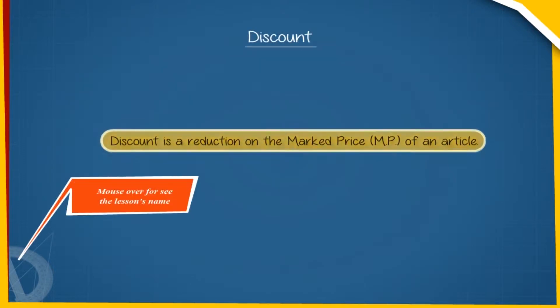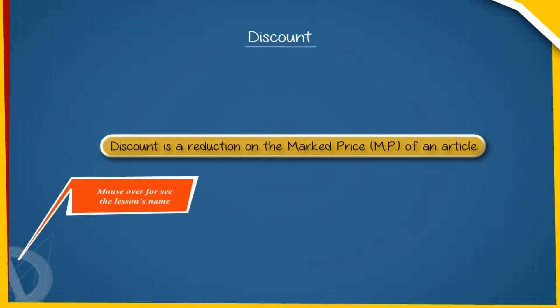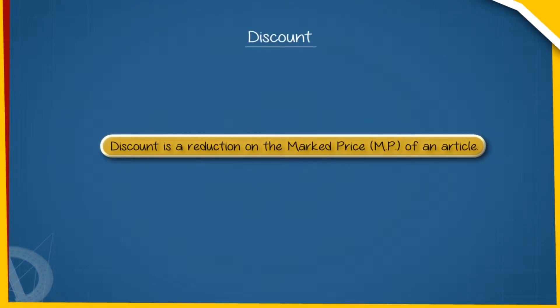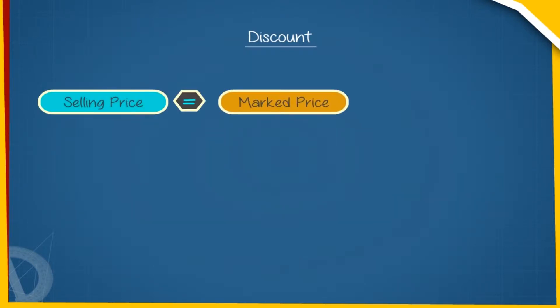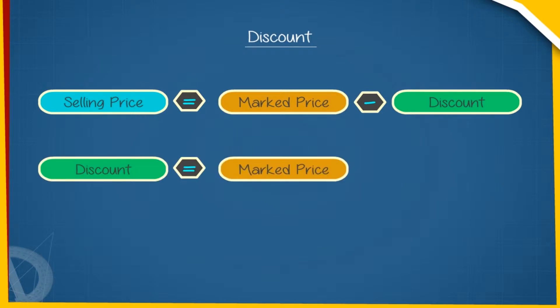Discount is a reduction on the marked price (MP) of an article. Selling price equals marked price minus discount. Discount equals marked price minus selling price. Discount is always calculated on the marked price. Let us consider a problem.